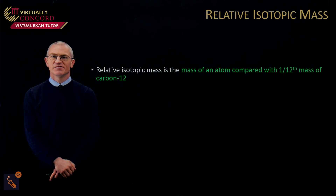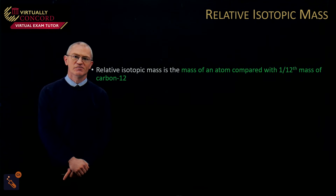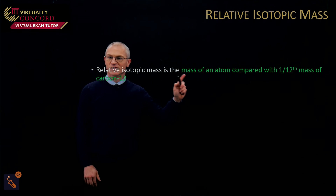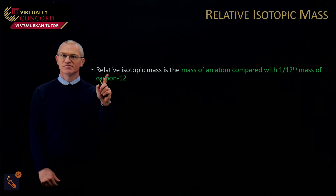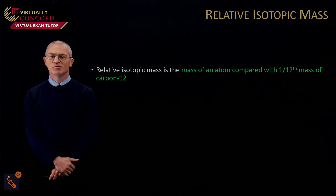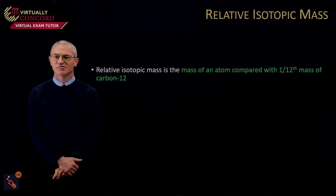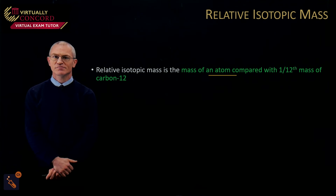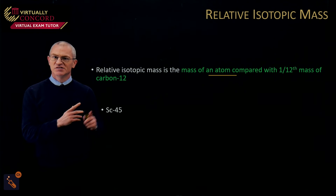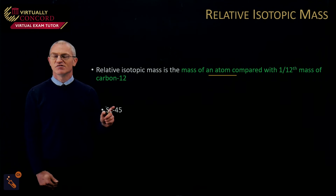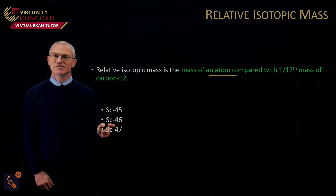Relative isotopic mass is a required definition: it is the mass of an atom compared with a twelfth of the mass of carbon-12. Our reference is carbon-12. The main thing people miss in exams is the word 'atom' — make sure you include it. In practice, relative isotopic mass is simply the mass number of the individual isotopes.